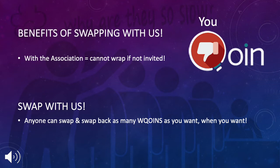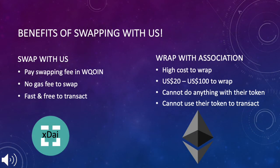You can swap as many W coins as you want back to coin too. Another benefit of using us is that you will only pay a swapping fee in W coin — you do not pay any expensive gas fees. With the coin association you wrap to Ethereum and pay transaction gas fees in Ether, which can be very expensive. Another important question you must ask yourself is what can you actually do with the coins you wrap through the association? At the moment you cannot do anything with their wrapped coins, and you cannot use the association's wrapped coin to trade as usual — the Ethereum fees are simply too high and the transaction speed way too slow.